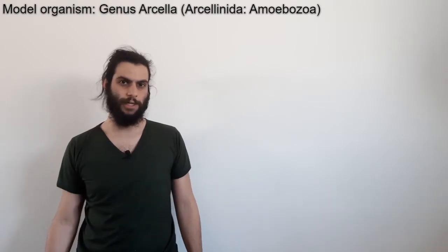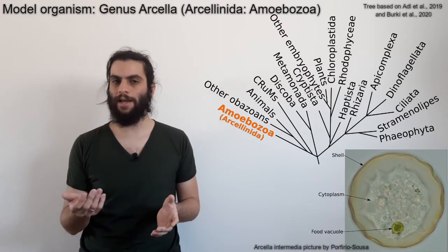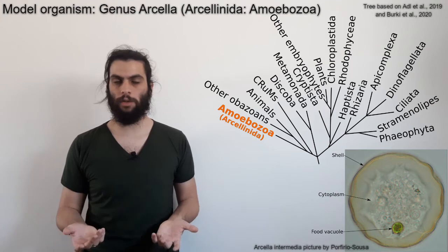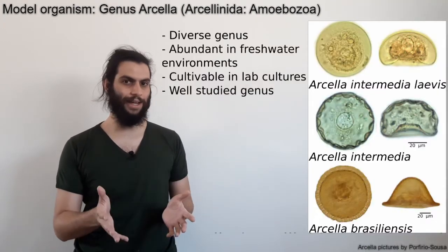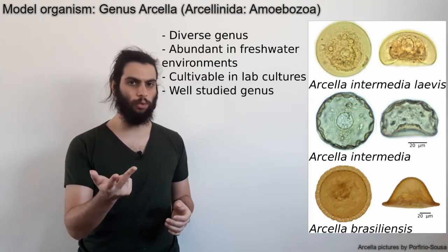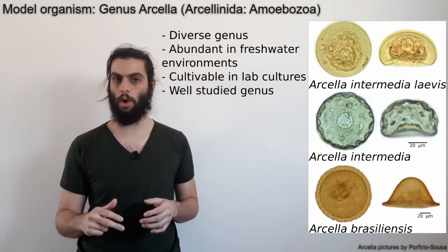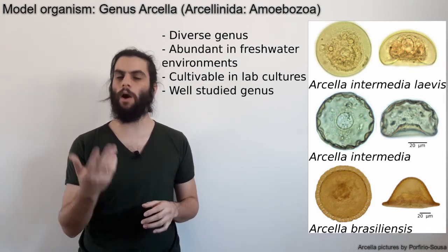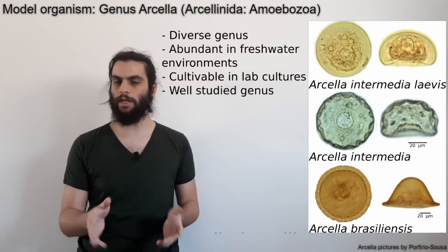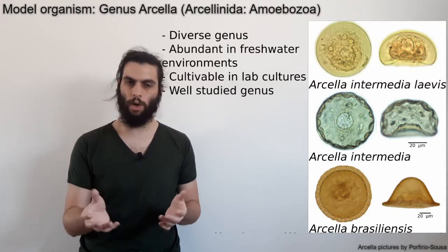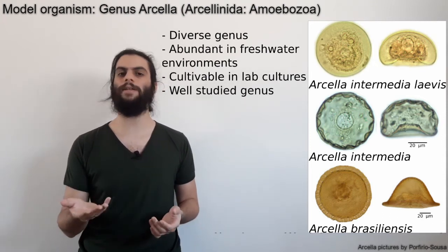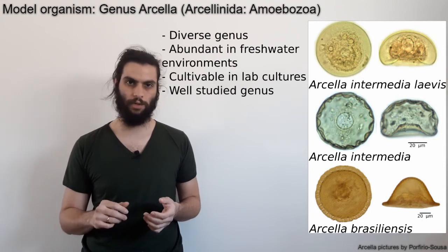So let's talk about our model organism. Arcelinida is characterized by the presence of an external rigid shell that covers the cell of these organisms. In our manuscript, we focus on the genus Arcella. Arcella is a highly diverse genus. It is present in diverse freshwater environments. We are able to cultivate many of them in laboratory cultures, and this genus has been well represented in the literature. Because of that, Arcella genus represents a great model for Arcelinida. We believe that a comprehensive understanding of this genus can establish a background to facilitate studying the other representatives of Arcelinida.